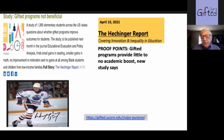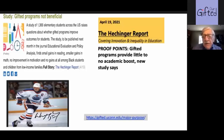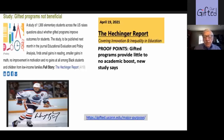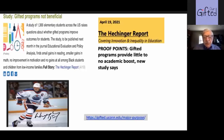Basically, what these researchers looked at were only achievement test scores. A lot of news feeds picked this up: 'Gifted programs not beneficial — a study of 1,300 elementary students across the US raises questions about whether gifted programs produce observable outcomes for students.' Of course, if they're only looking at the deductive, didactic end — if they're only looking at kids' responses on standardized tests — that's not what the main goal is. If we want to produce the next generation of creative, inventive, investigative scientists, artists, musicians, and inventors, we've got to be able to let the public know what we stand for.